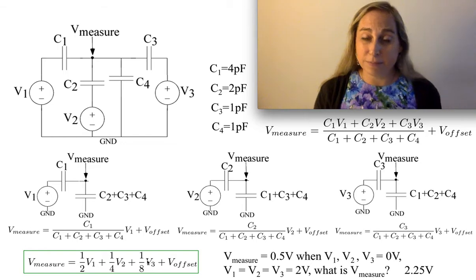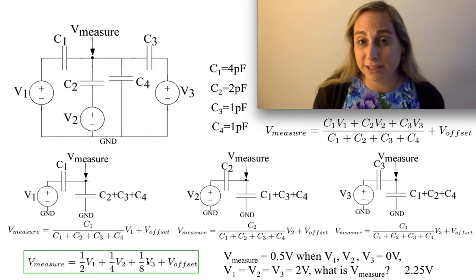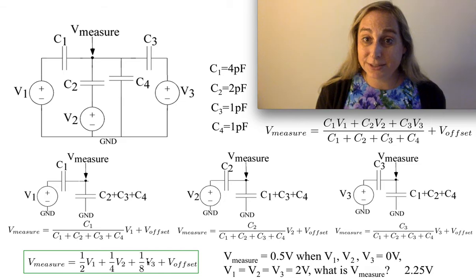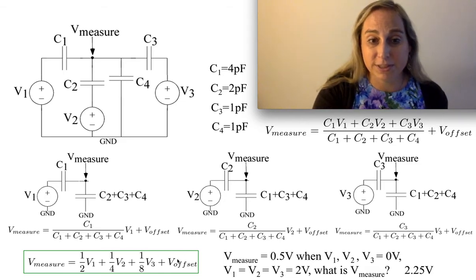And if this was a resistor divider, I'd pretty much be done, right? If these were just conductances. But these are capacitors, so the one thing I still have to worry about is what is the offset, which is due to what is the overall charge there.